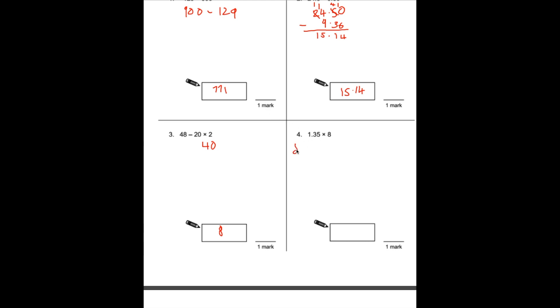So 8 times 1 is 8. Now 8 times 35: 8 times 5 is 40, put the 0, carry the 4. 8 times 3 is 24, plus the 4 is 28.